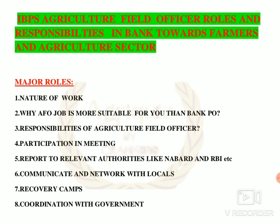Point number two: why is the AFO job more suitable for you than Bank PO? There is a simple difference between these two posts. An Agri Officer is a specialized post while a PO is a generalized post. An Agri Officer is limited to disbursing loans for agricultural purposes, while a Bank PO has a much more diversified portfolio and can also take on the responsibilities of an Agri Officer. POs work in various departments and their promotional hierarchy is much faster than that of an Agriculture Officer.